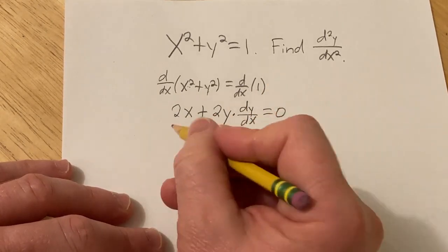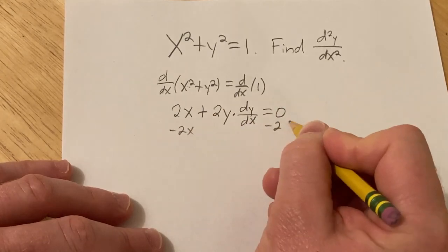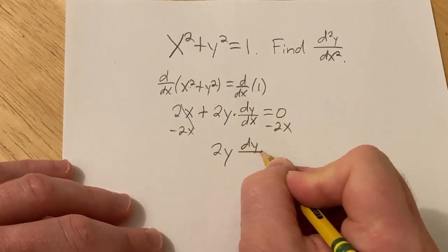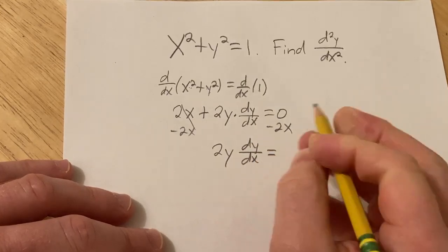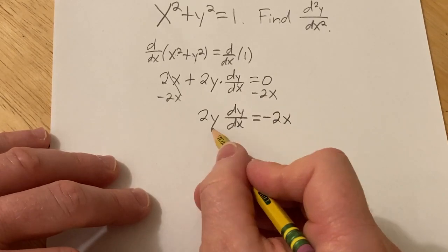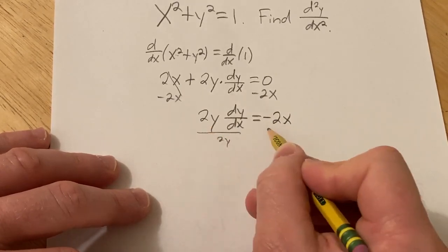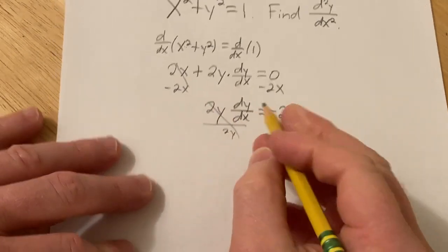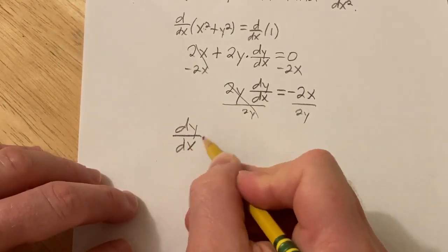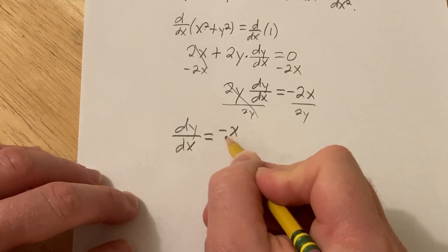So here we can subtract 2x. So we get 2y dy/dx equals negative 2x. And then we can divide by 2y. So we get dy/dx equals negative x over y.